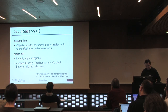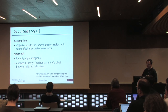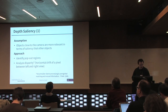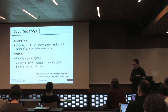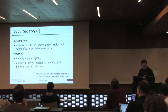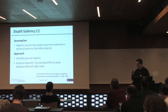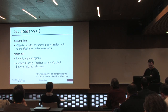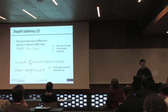The third saliency map is about depth, based on the assumption that objects close to the camera are more relevant compared to objects in the background. However, later in the experiments we will see this is not always true. Our approach is to identify so-called pop-out regions, which we do by analyzing the disparities — the horizontal shift of pixels. We use an approach presented by Hirschmuller about five years ago because it is very fast.